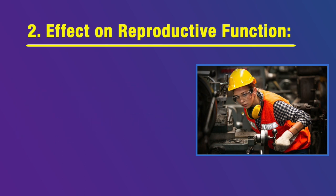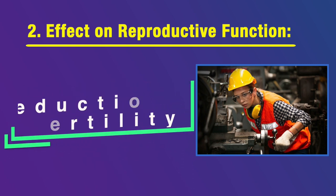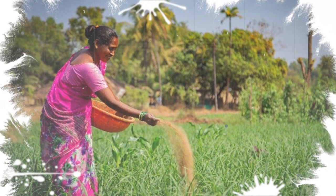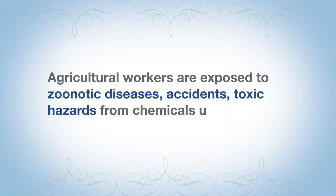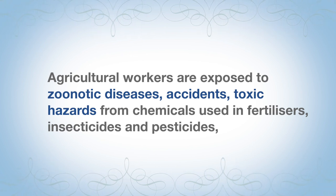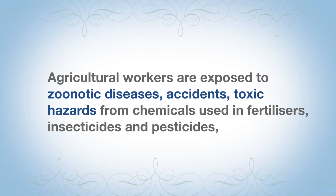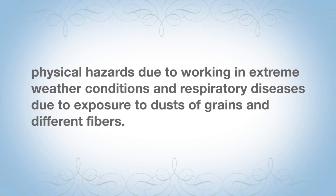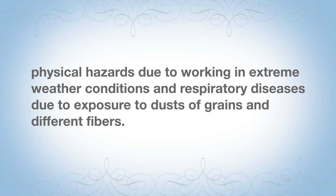Reproductive health effects from heavy physical activity can present as dysmenorrhea, amenorrhea, anovulatory cycles, and a reduction in fertility. In agricultural workers — women in India are a major task force in this field — they are exposed to several problems including zoonotic diseases, tick bites, insect bites, viral loads, and toxic hazards from chemicals such as pesticides and fertilizers applied in agricultural fields. They are also exposed to physical hazards from working in extreme weather conditions, and respiratory hazards like exposure to dust, grain, and different fibers.